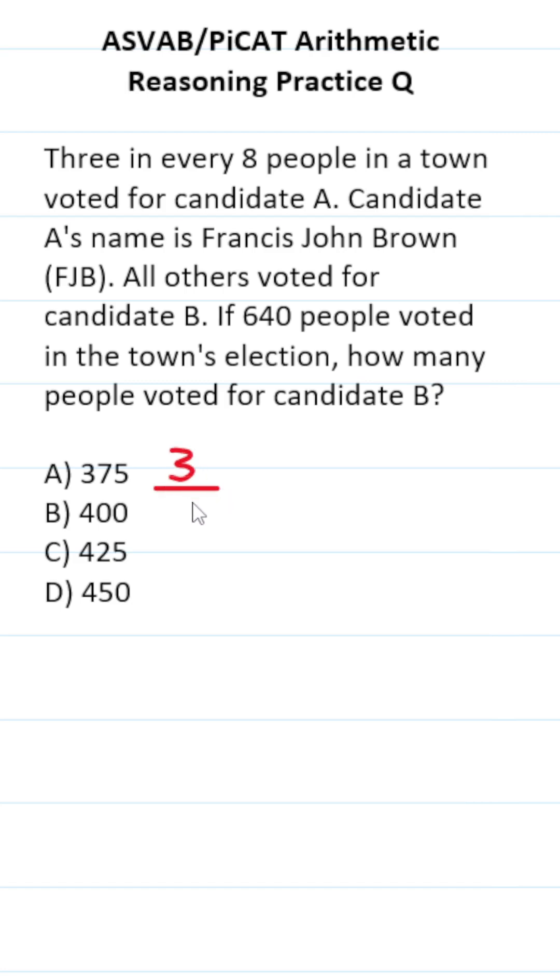According to the problem, three out of every eight people voted for candidate A. By extension, that means five out of every eight people must have voted for candidate B.